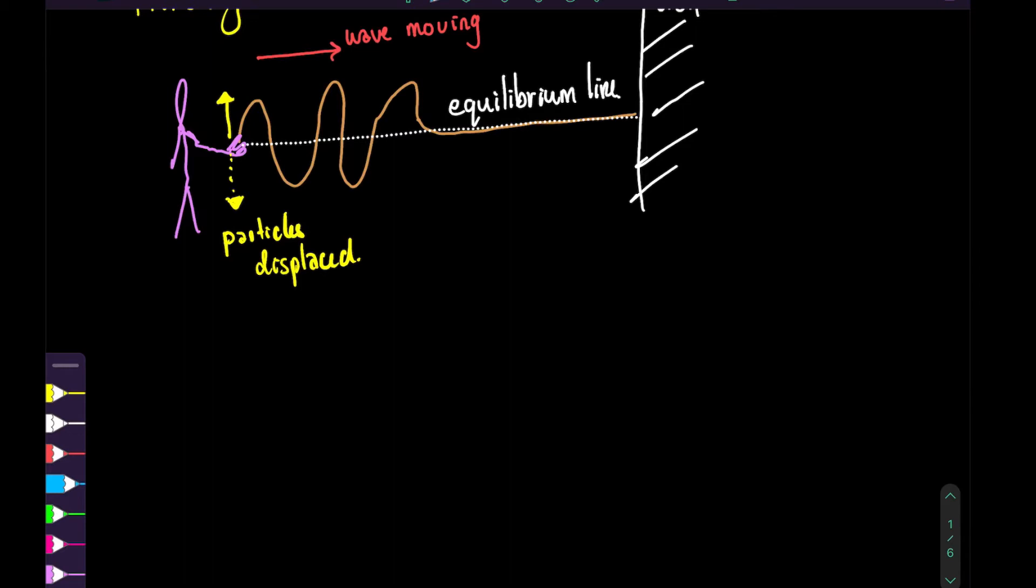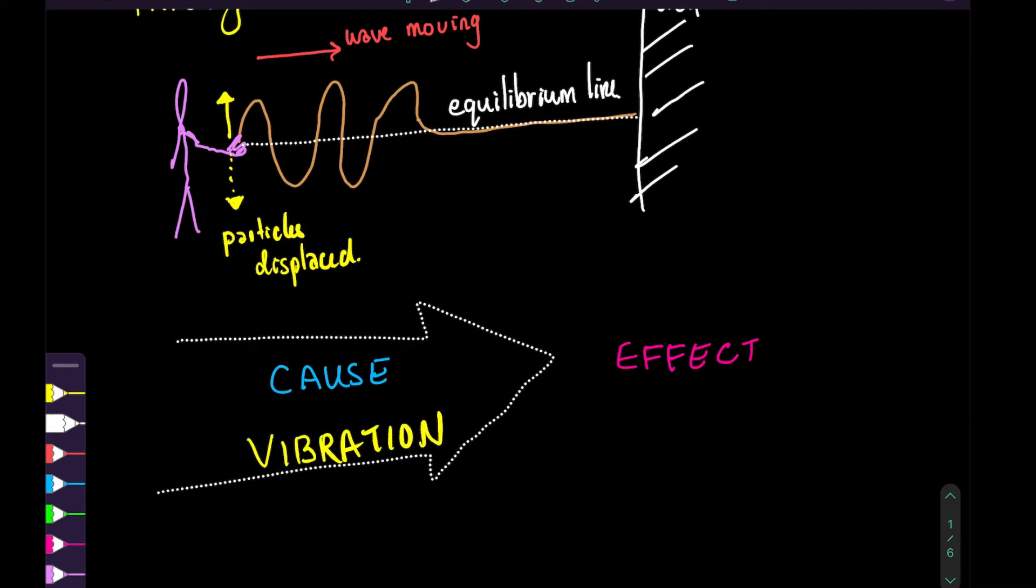Once again, one way to remember these two things, vibration and wave, is to think about cause and effect. The cause in this case is the vibration, and the effect is the wave.